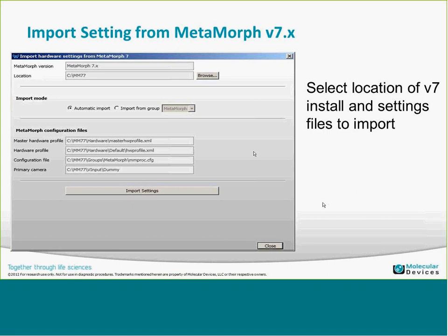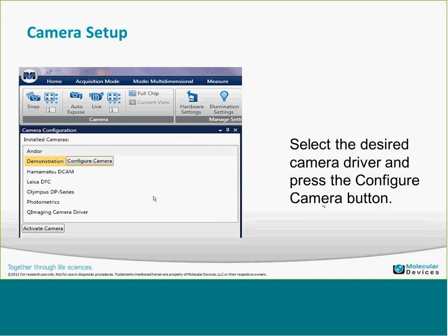If not, you can easily do this manually. The first thing to look at is Select Camera Setup, which opens the camera configuration pane with a list of available camera drivers. You highlight the driver you want to activate as the active camera, then click Configure Camera to bring up the dialog — the same camera configuration dialog you've seen in Metamorph for Olympus — with settings specific to that camera.